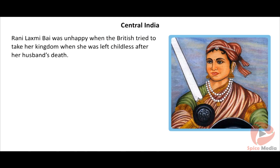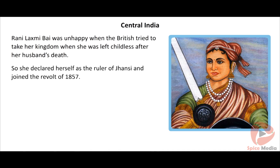Rani Lakshmi Bai was a talented queen who revolted against the British when she was not allowed to adopt her son to inherit her kingdom after her husband's death in 1854. In Jhansi, Rani Lakshmi Bai was proclaimed as ruler and sent troops to the battlefield. She joined hands with Maulvi and Nana Sahib in the 1857 revolt against the British.